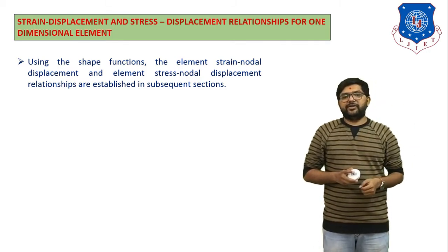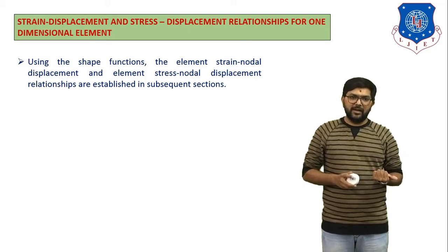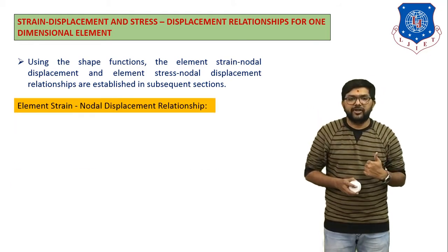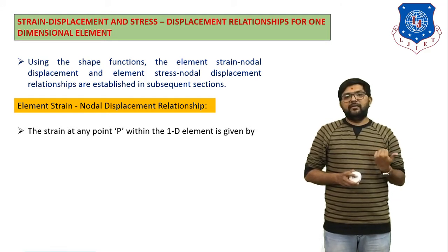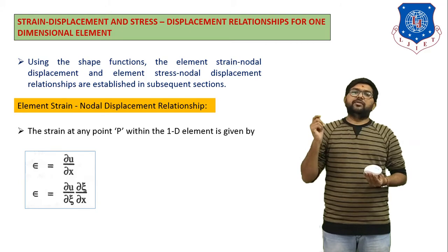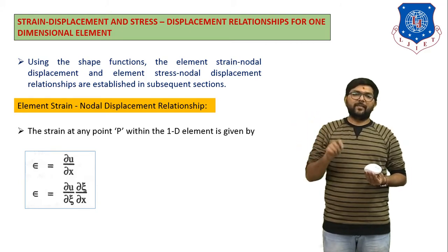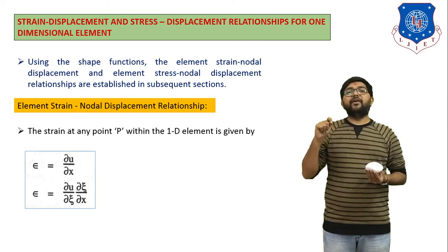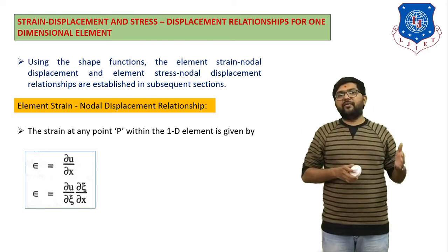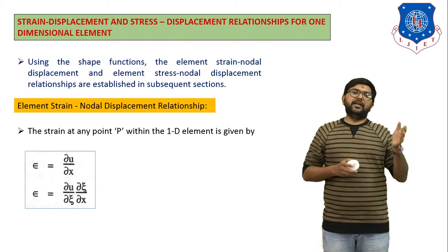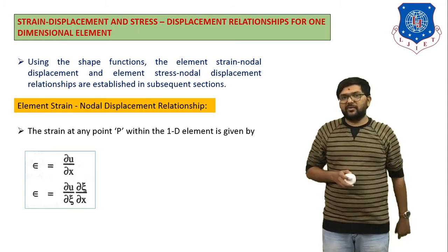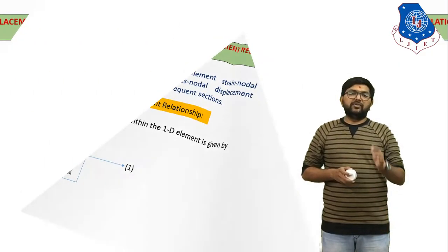Using the shape function, the element strain–nodal displacement and element stress–nodal displacement relationships are established. The strain at any point within a one-dimensional element is given by epsilon equals del u upon del x. Using the chain rule of differentiation, we can write epsilon equals (del u / del zeta) times (del zeta / del x). This is equation number 1.